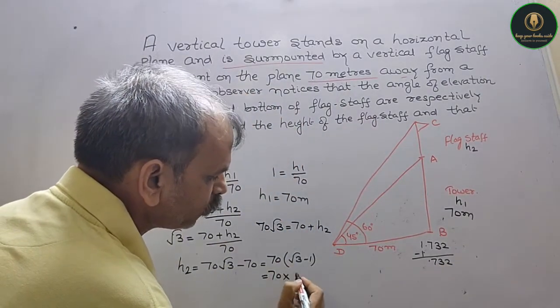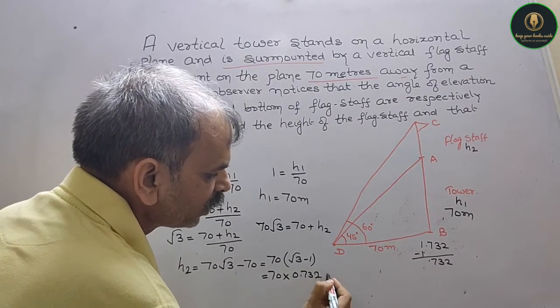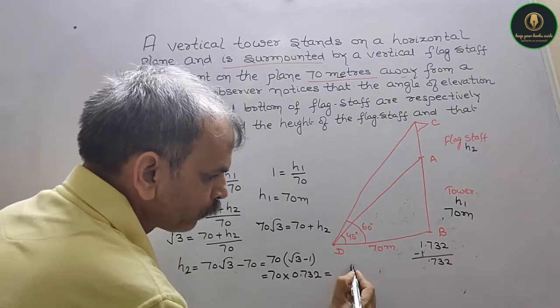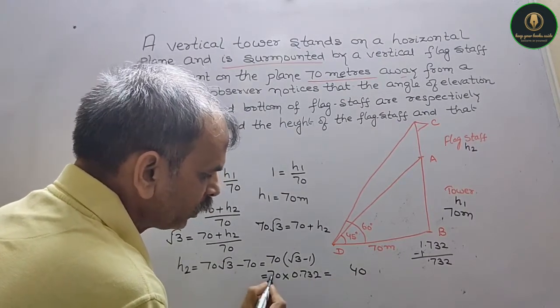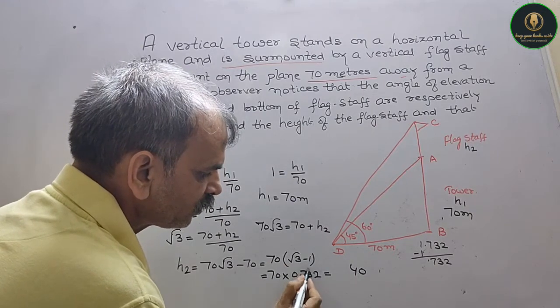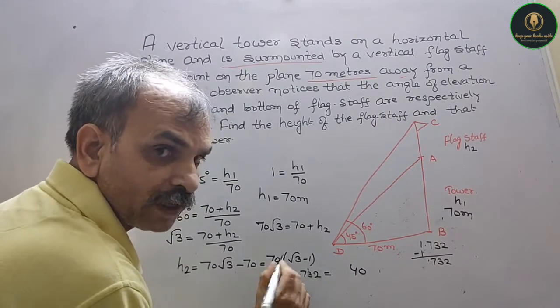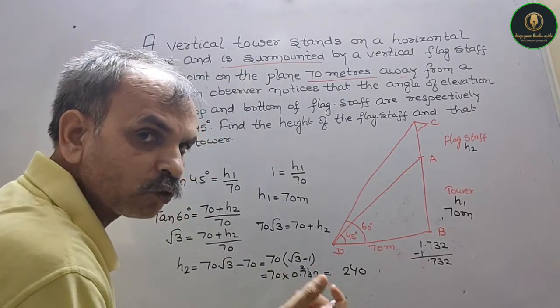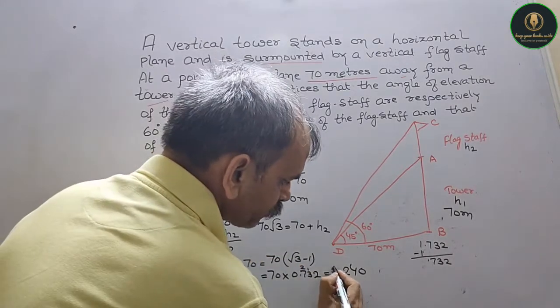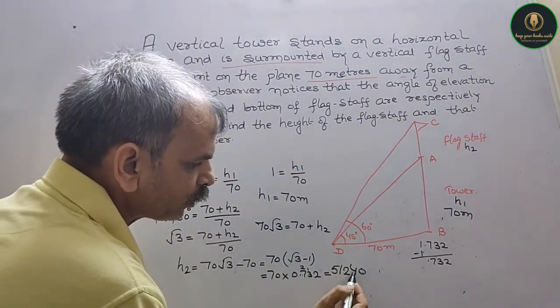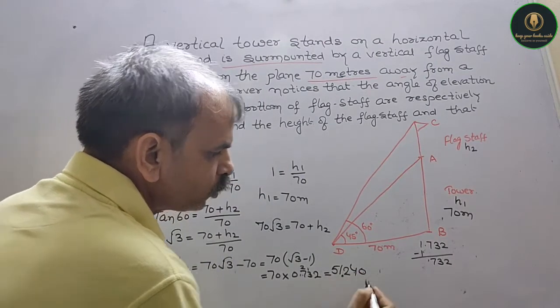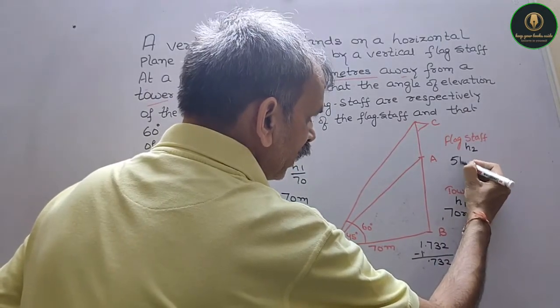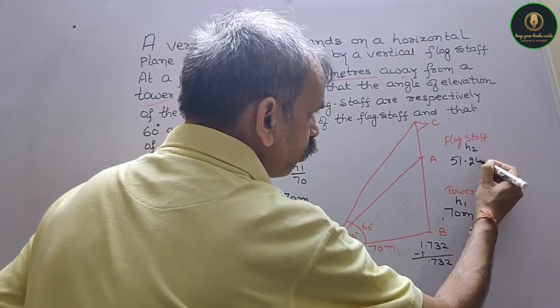So your value will be 70 into 0.732. That is equal to, now multiply by 7. 7 times 2 is 14, take the zero ahead, 7. 7 times 3 is 21 plus 1 is 22. Carry. 7 times 7 is 49 plus 2 is 51. Now point - 1, 2, 3. 1, 2, 3. So you will get the flagstaff as 51.24 meters.